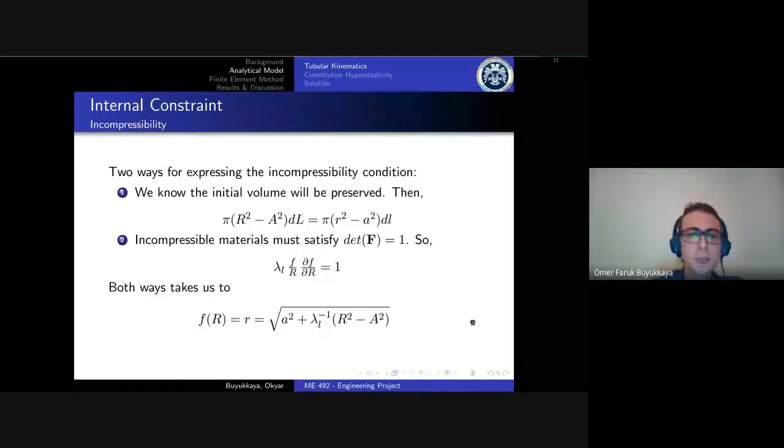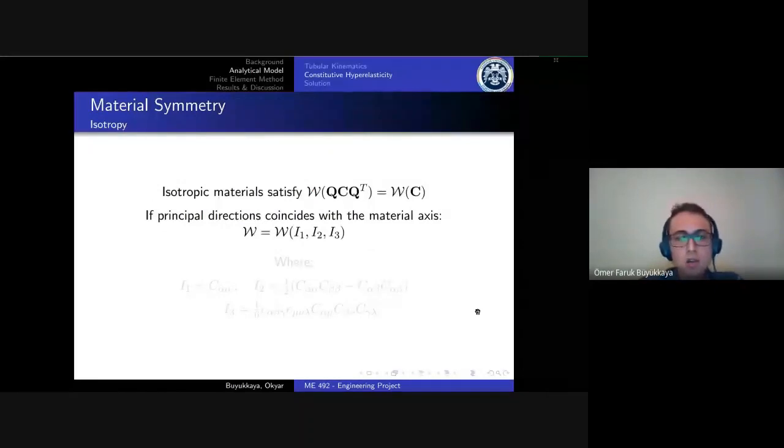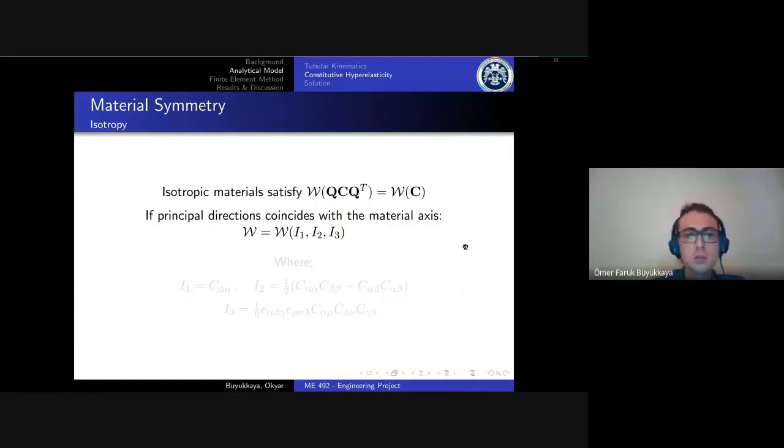We need to make another assumption here. An isotropic material must satisfy this condition, where Q is just an arbitrary orthogonal tensor. If principal directions coincide with the material axes, the strain energy density function only relates to the first three invariants of the deformation tensor.